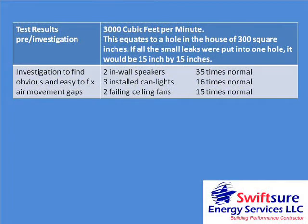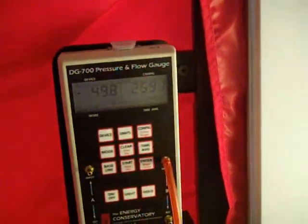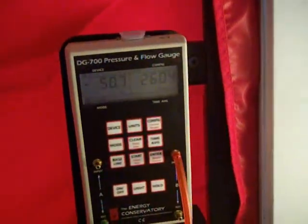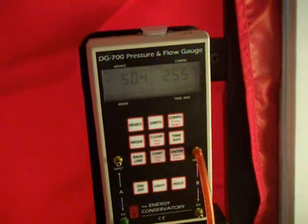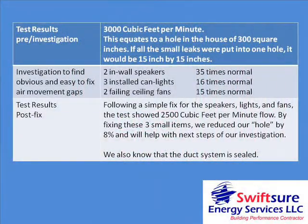In our testing we found three areas where very quick fixes could be implemented and retested. The in-wall speakers, three lights and two fans were quickly and easily sealed. The retest showed an immediate decrease in air leakage of 8%. We also know exactly what items are next to be worked on in this home.